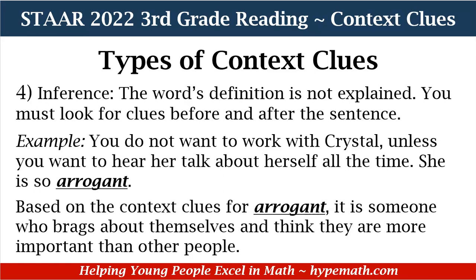Our next type of context clues is inference. The word's definition is not explained — you must look for clues before and after the sentence. In our example: 'You do not want to work with Crystal unless you want to hear her talk about herself all the time. She is so arrogant.' You can look at the sentences before it — we know Crystal talks about herself all the time — so we can determine that arrogant means someone who brags about themselves and thinks they are more important than other people.